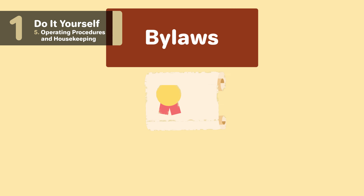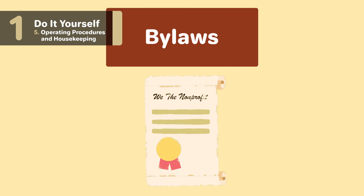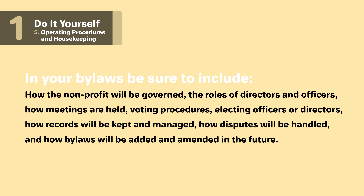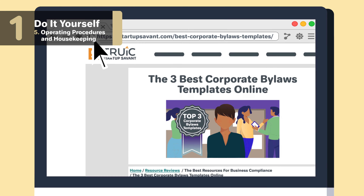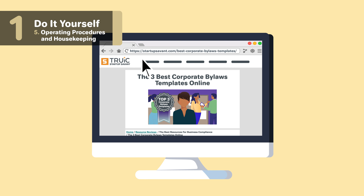Your bylaws are the rules that determine how your organization will be governed and run — you can think of it as a constitution for your nonprofit. It makes the rules and priorities clear for everyone involved. In your bylaws, be sure to include how the nonprofit will be governed, the roles of directors and officers, how meetings are held, voting procedures, electing officers or directors, how records will be kept and managed, how disputes will be handled, and how bylaws will be added and amended in the future. When you're ready to get started, check out some bylaws templates linked in the description below.